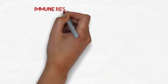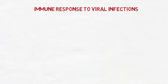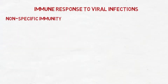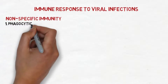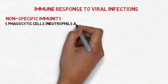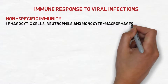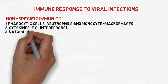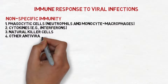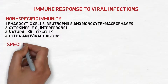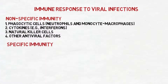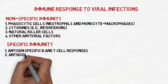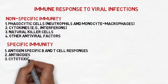Talking about the immune response to viral infections, we have non-specific and specific immunity. The non-specific immunity is accomplished by phagocytic cells such as neutrophils and monocyte macrophages, cytokines such as interferons, natural killer cells, and other antiviral factors. The specific immunity is accomplished by antigen-specific B and T cell responses, antibodies, cytotoxic T cells, and ADCC.